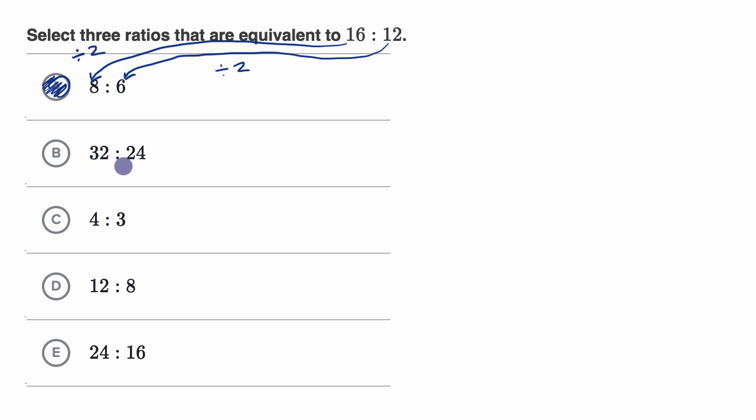What about 32 to 24? Well, to go from 16 to 32, we multiply by two. To go from 12 to 24, we also multiply by two. So this is an equivalent ratio.